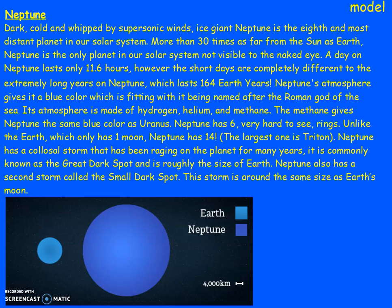A day on Neptune lasts only 16.1 hours. However, the short days are completely different to the extremely long years on Neptune, which last 164 Earth years. Neptune's atmosphere gives it a blue colour, which is fitting with it being named after the Roman god of the sea — the sea being blue. Its atmosphere is made of hydrogen, helium, and methane — just different gases. These are things I researched during the planning lesson. I looked back at my plan and wrote them in. The methane gives Neptune the same blue colour as Uranus. Neptune has six very hard to see rings.